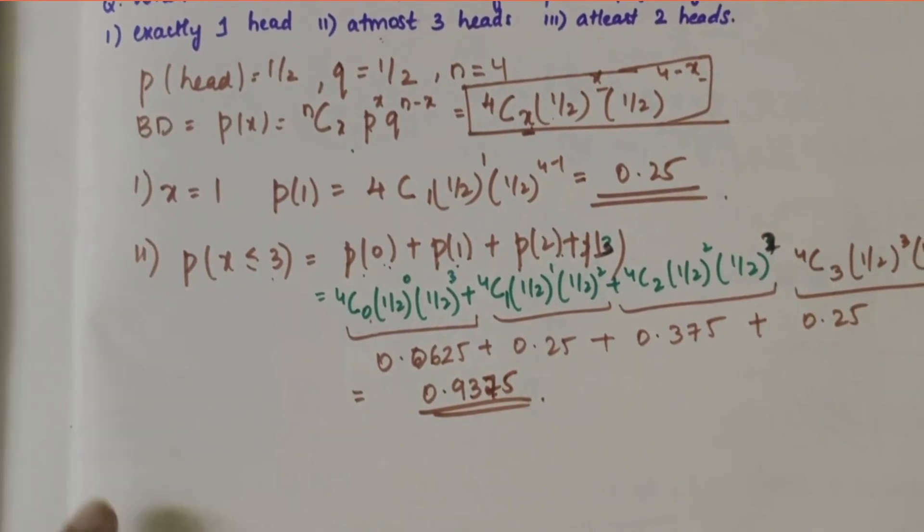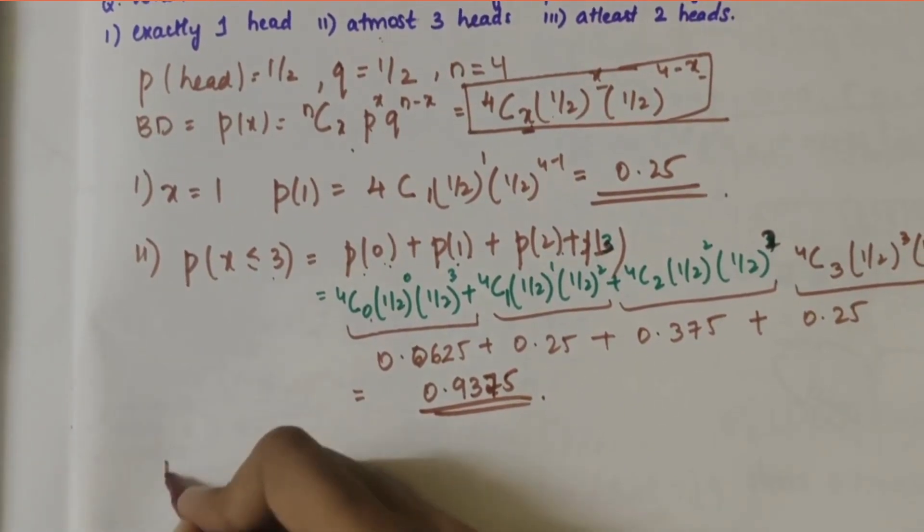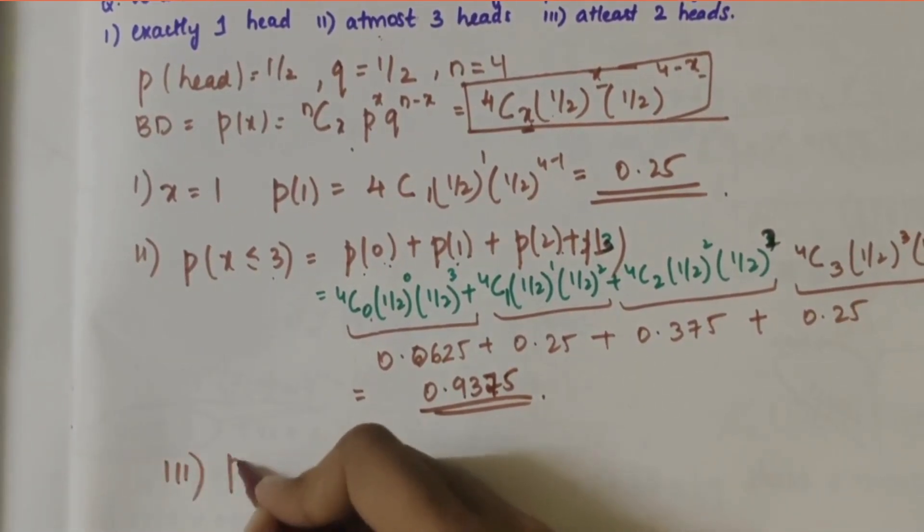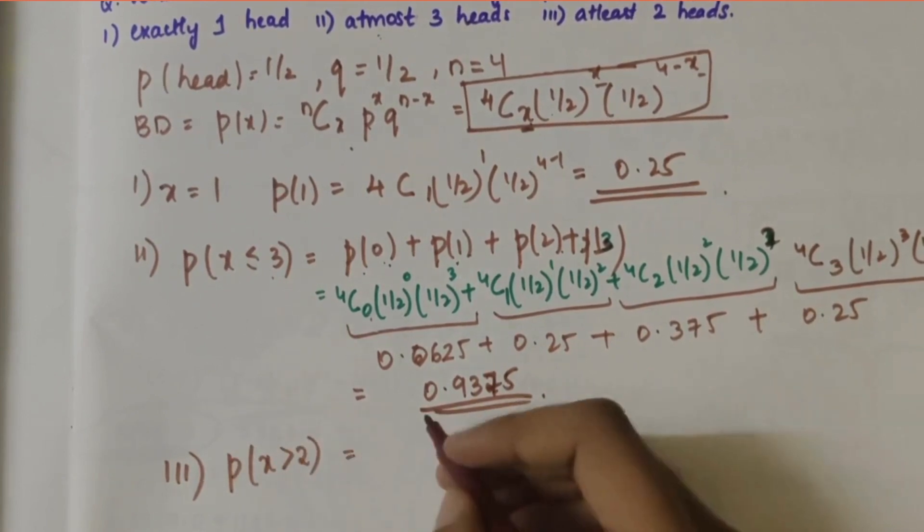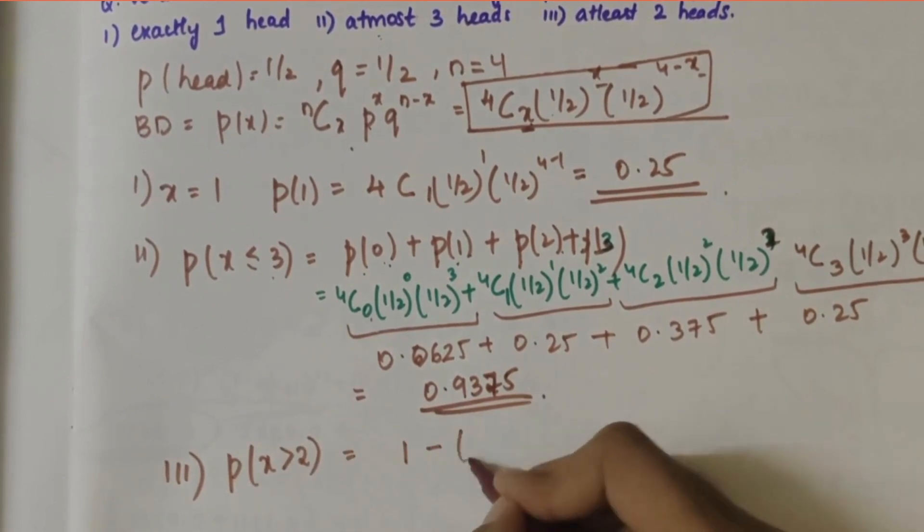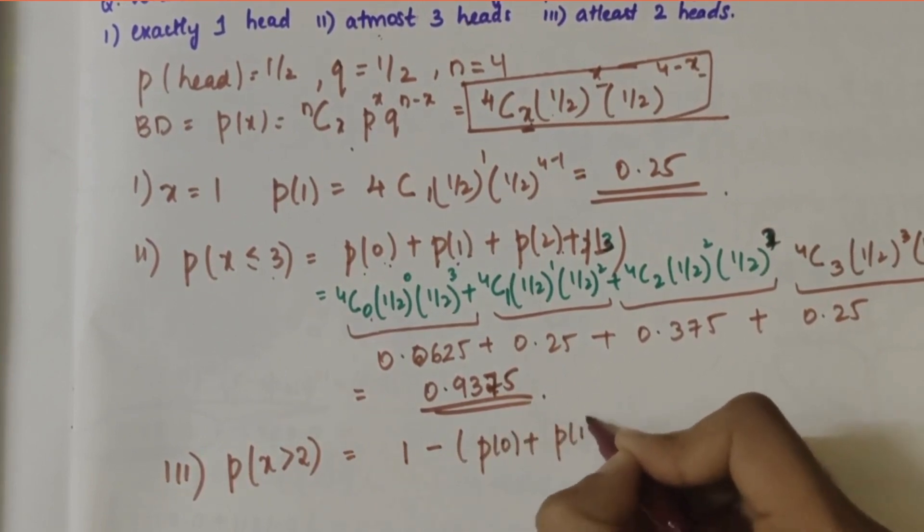Now the last part is at least two heads. At least two heads means P(X ≥ 2), which equals 1 - [P(0) + P(1)].